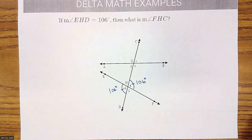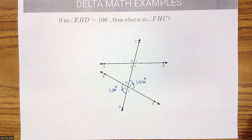Any last minute questions? To recap: vertical angles are always congruent; linear pairs equal 180 degrees; supplementary angles equal 180 degrees; and complementary angles equal 90 degrees. That's the lesson for today — see you on the next one!